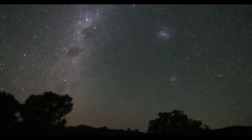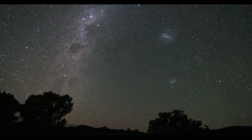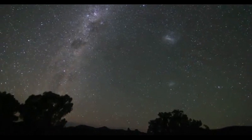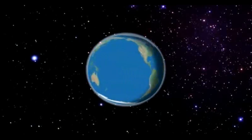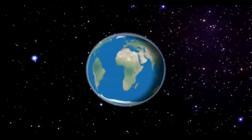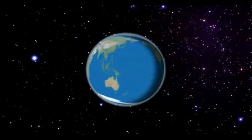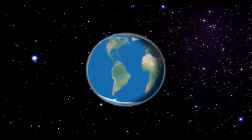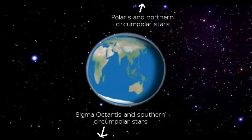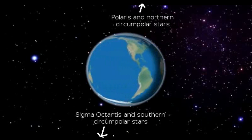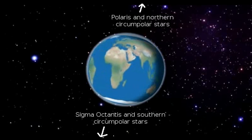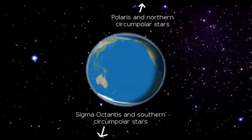This apparent spinning of the stars around a north and south axis is perfectly explained by the heliocentric globe model, as the spherical Earth rotates on its axis, and our view of the essentially stationary distant stars rotates. The distant stars to the north and south spin around a point because we are seeing them over the spinning axis of the Earth.